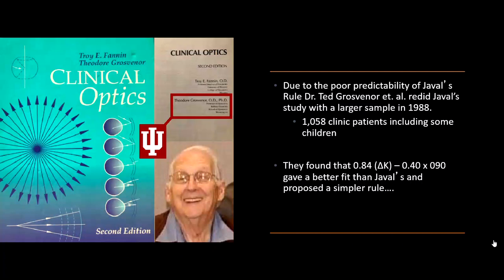He found that about 0.84 times the change in astigmatism minus 0.40 at 90 gave a better fit than Javal's and proposed a simpler rule.